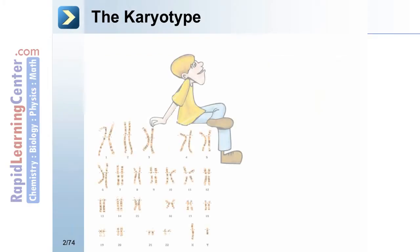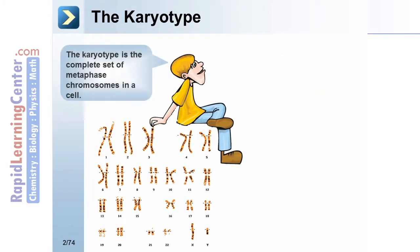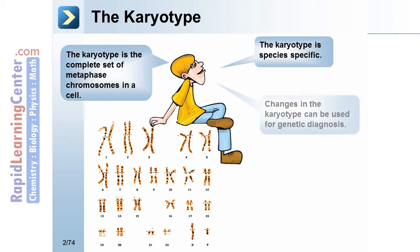The karyotype is the complete set of metaphase chromosomes in a cell, and is species-specific. Changes in the karyotype can be used for genetic diagnosis. Notice in the square box the X and Y chromosomes, which makes this the karyotype of a male.